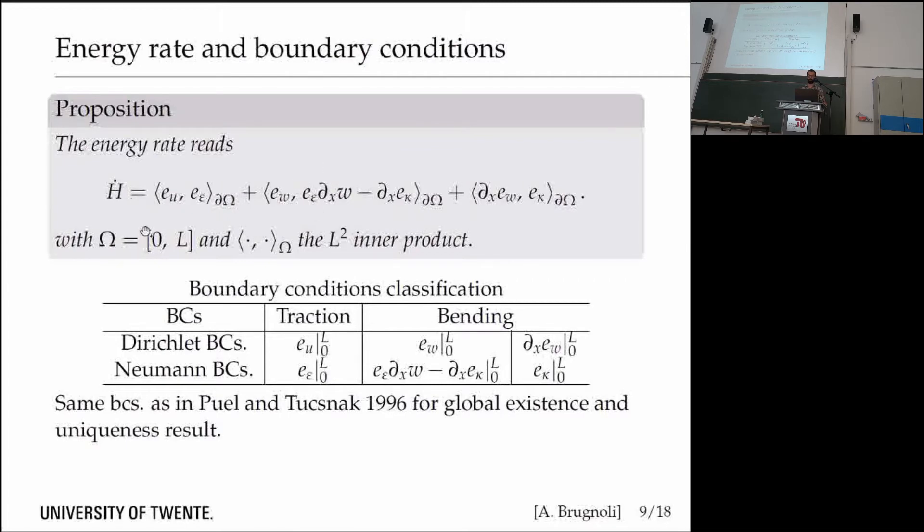I'm using the L2 inner product, and in particular for the energy rate, the L2 inner product on the boundary becomes the evaluation of the function at the extremities of the beam.